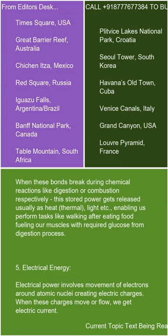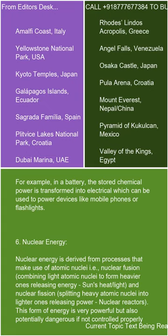5. Electrical energy. Electrical energy involves the movement of electrons around atomic nuclei, creating electric charges. When these charges move or flow, we get electric current. For example, in a battery, the stored chemical energy is transformed into electrical energy, which can be used to power devices like mobile phones or flashlights.